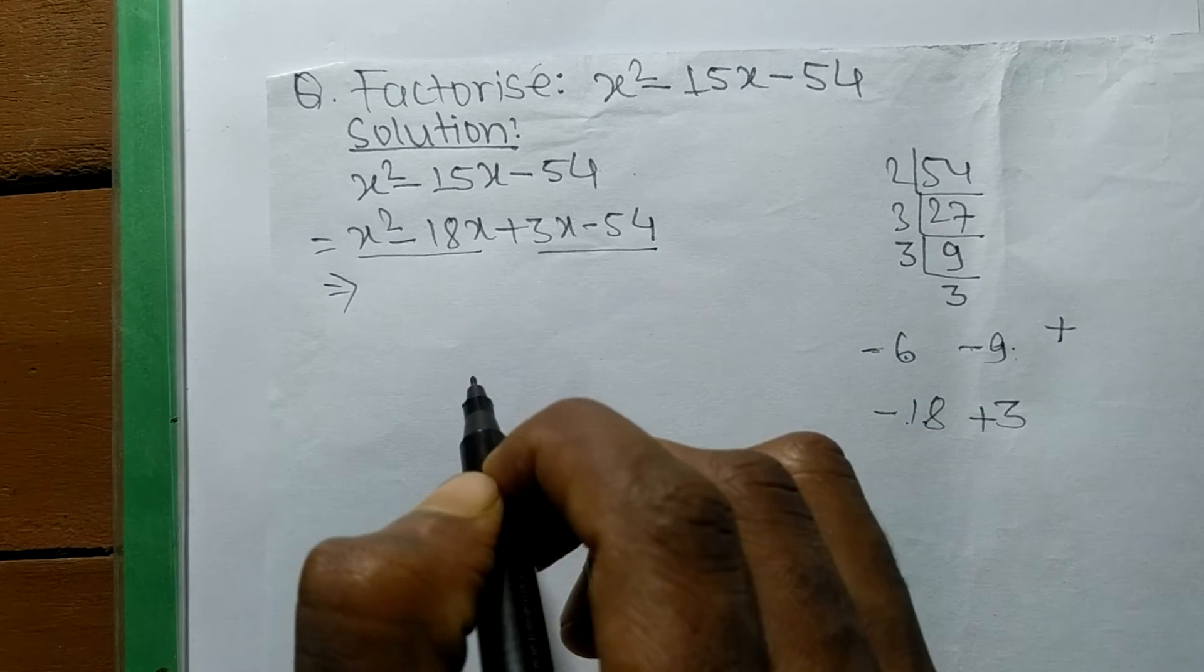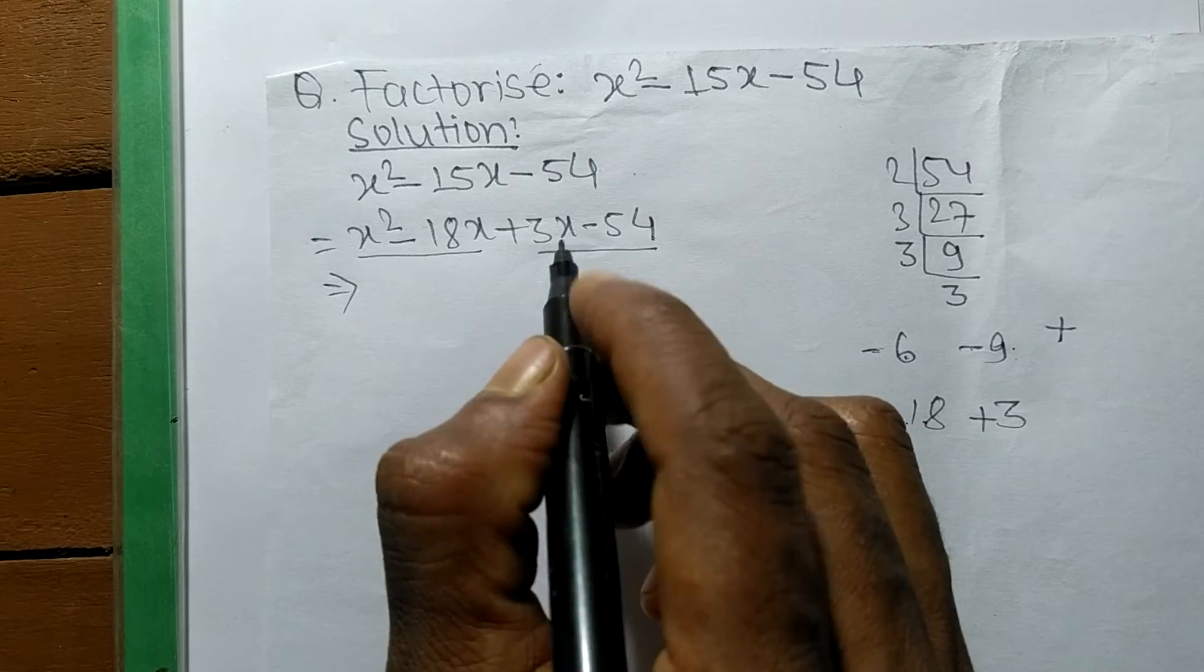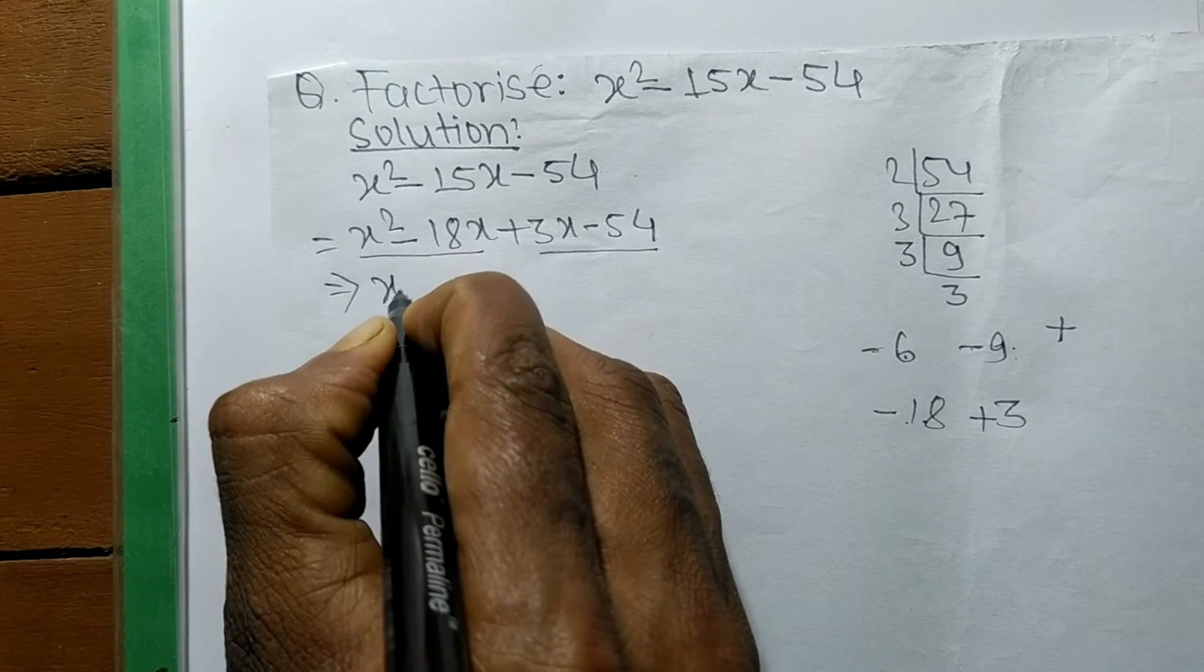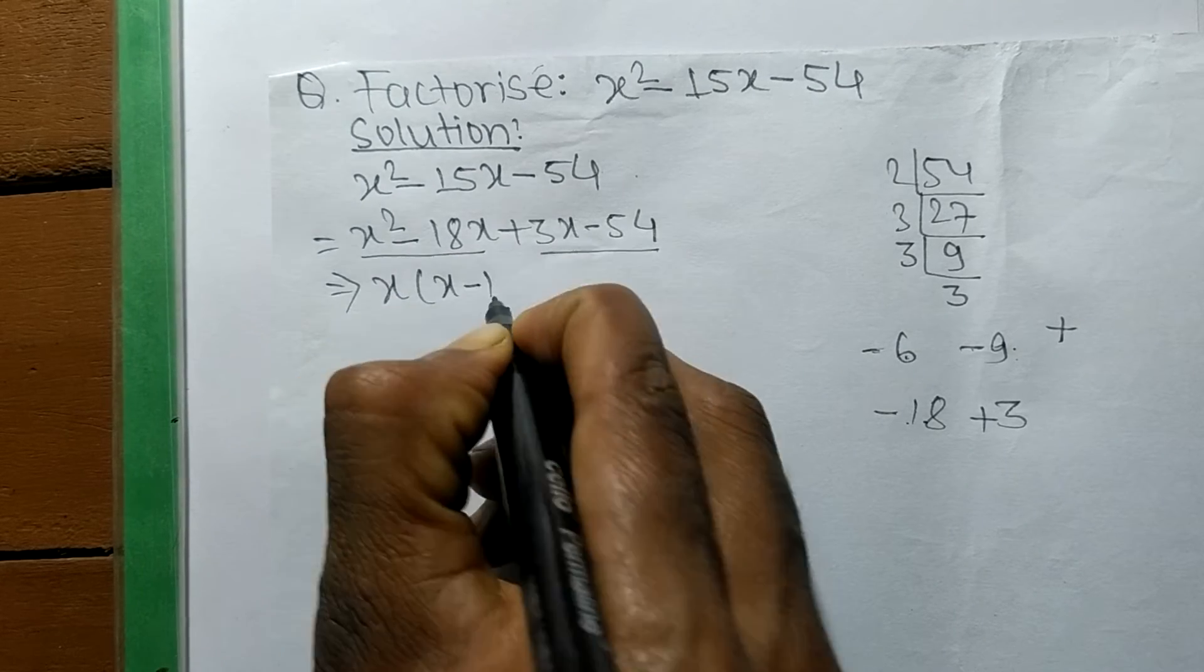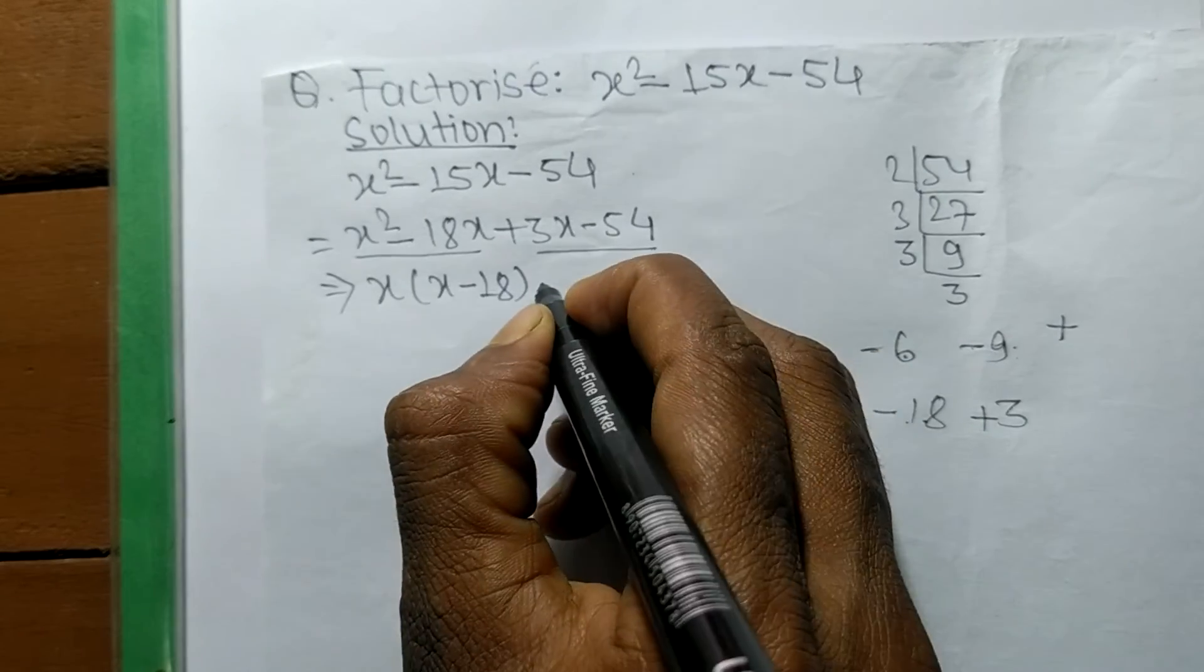Now we find the common factor in both pairs. In the first pair, the common is x, leaving x - 18. Similarly, in the second pair, we factor out the common.